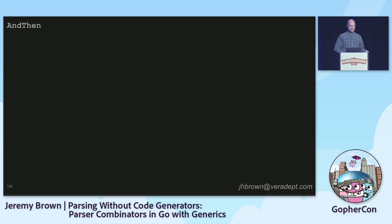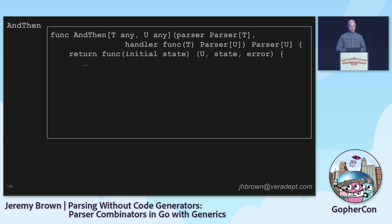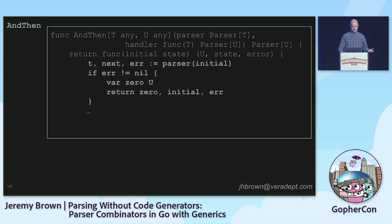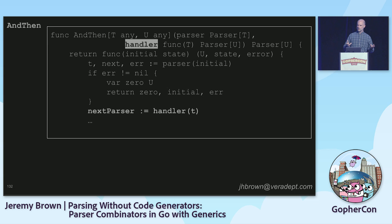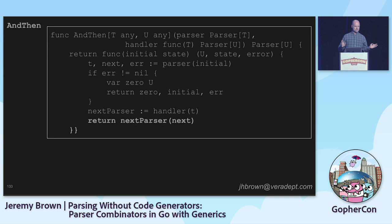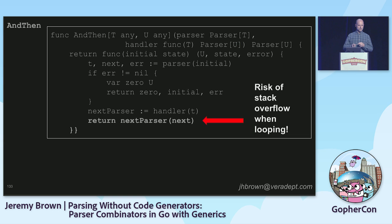`andThen` is very similar in structure. It's a parser-generating function that takes a parser and a function that operates on the result, but returns a parser instead of just a value. It starts out similarly: we run the first parser. If it errors, we bail out. If it does not error, we apply our handler function to the result to get a new parser, then we run that and return its result. If we had full tail call optimization, this would not risk blowing out the stack — but it does, which is why there has to be a special form for looping.